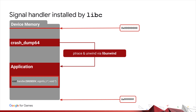On older Androids it's libcorkscrew; on newer Androids it's libunwind. This is a much different process than Java crash handling. An uncaught exception in Java does not crash the JVM, and the JVM keeps track of all the stacks for us. This is neat because inside the uncaught exception handler, we can simply query for all of our stacks.